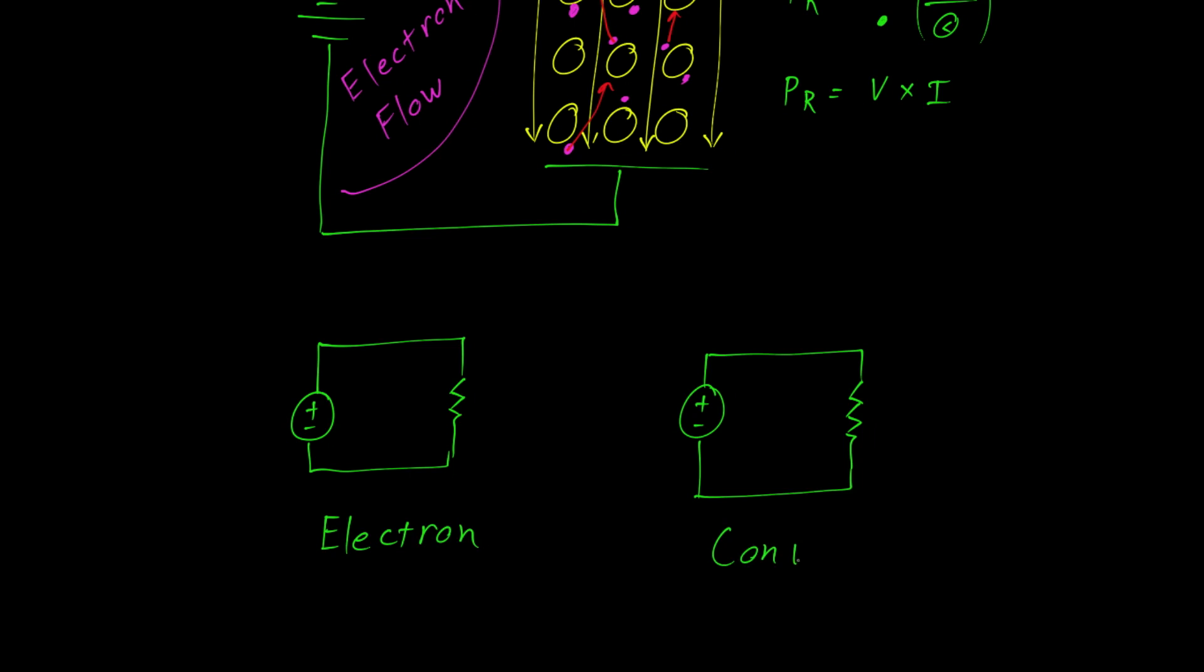Please don't confuse this with the model of conventional flow. In which case, the particle that flows originates from the positive terminal of the battery goes through the resistor and returns to the negative terminal.